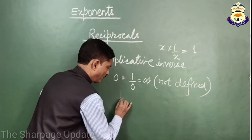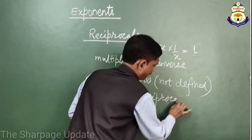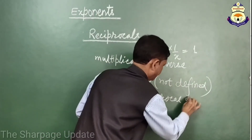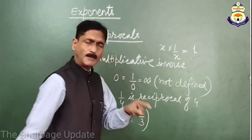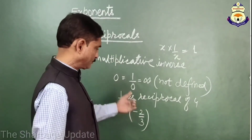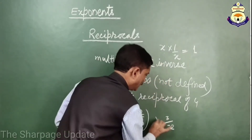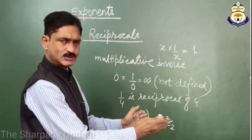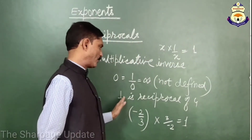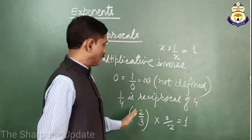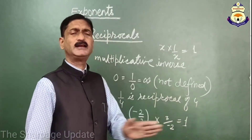Some examples of reciprocal: 1/4 is the reciprocal of 4. The reciprocal of -2/3 is 3/(-2), because if we multiply these two numbers we get the result 1. So 1/4 is the reciprocal of 4, and the reciprocal of -2/3 is 3/(-2), or equivalently -3/2.